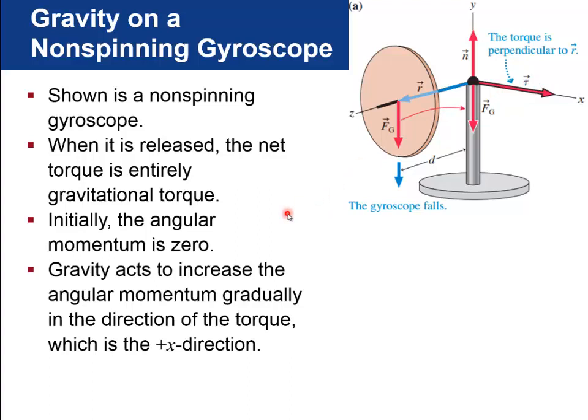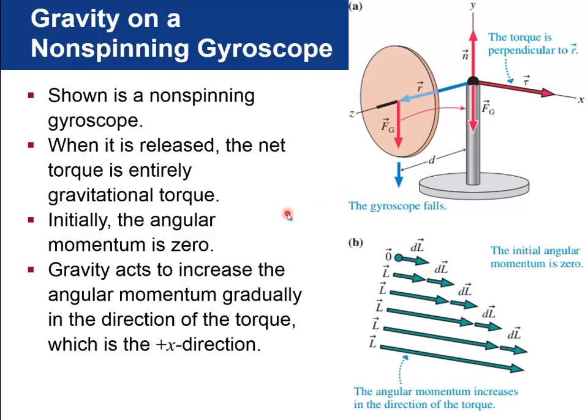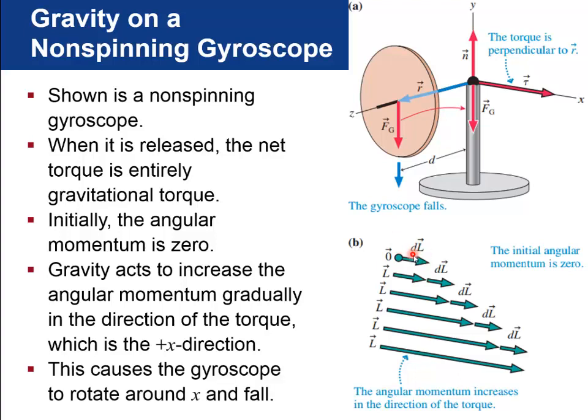And what that's going to do is that's going to change the angular momentum of the wheel, and it's going to cause it to get angular momentum about the x direction. So over a small amount of time, dt, there will be this dl, increasing the angular momentum in the x direction. And what that does is it causes it to rotate angular velocity vector, which is around the x axis in this y, z plane. So it means it's going to fall, okay? It's going to rotate downwards like this. This angular momentum vector just gets bigger and bigger.